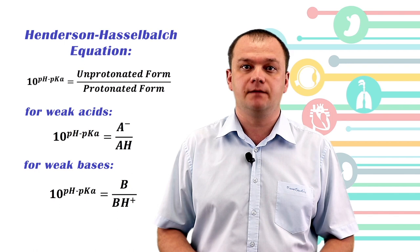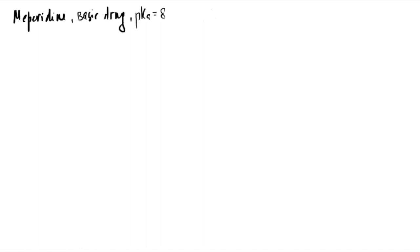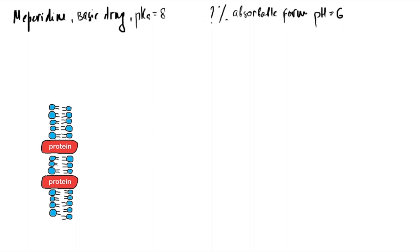Let's make calculations with these equations. First situational task: we have meperidine, a basic drug with pKa equal to 8. The question is: what percentage of drug will be in absorbable form at pH equal to 6? Absorption means penetration through the cell membrane. We remember that the ionized form is unable to penetrate through the cell membranes, while the non-ionized form penetrates very well — the non-ionized form is also the absorbable form.